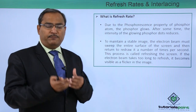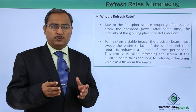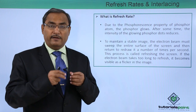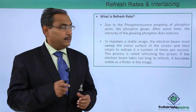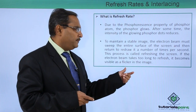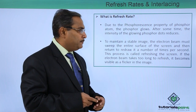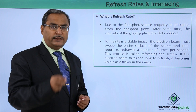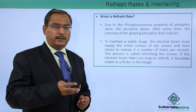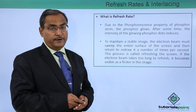After emitting the energy, the phosphor will lose the extra energy that was imparted by the electron beam. That is why it requires refreshing. To maintain a stable image, the electron beam must sweep the entire surface of the screen and return to redraw it a number of times per second. The electron gun should keep refreshing those energy levels a certain number of times within a second. This process is called refreshing the screen.